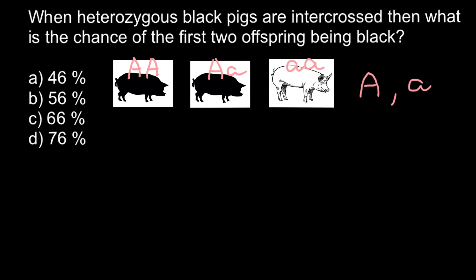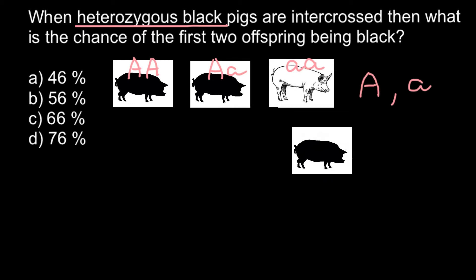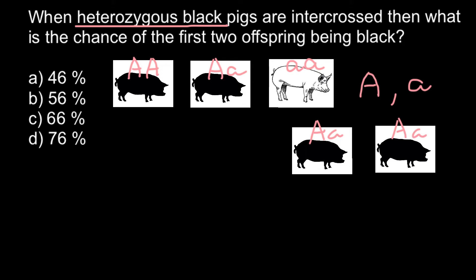According to our problem we have to intercross two black pigs that are heterozygous, which means we choose the genotype Aa and cross it with itself. Parent one and parent two are each heterozygous — capital A small a crossed with capital A small a. Let's build the Punnett square with parent one on top and parent two on the side.